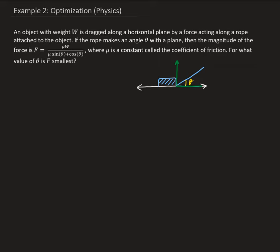That will give us our critical point, and then we need to verify that this is going to be the smallest value. To do that, we need to use the first derivative test. So let's go ahead and rewrite the original force in terms of something where we can then take the derivative.